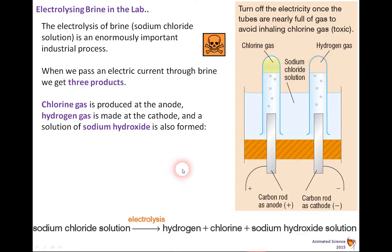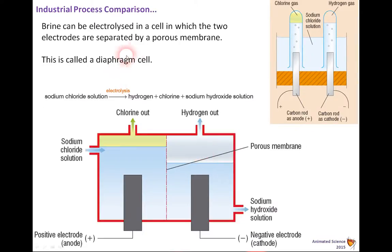We've got to be really careful to avoid inhaling the chlorine gas, as it is a very dangerous process. The hydrogen gas is, of course, explosive. We can test for these gases: litmus paper should go bleach white for chlorine, and hydrogen gas should give a squeaky pop. Now, if we look at the industrial comparison — that was our lab experiment — and here you can see: chlorine out, hydrogen out, sodium chloride in, sodium hydroxide out.